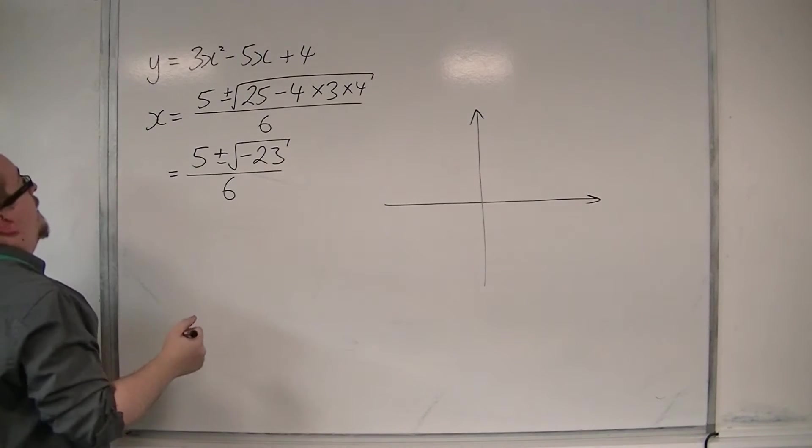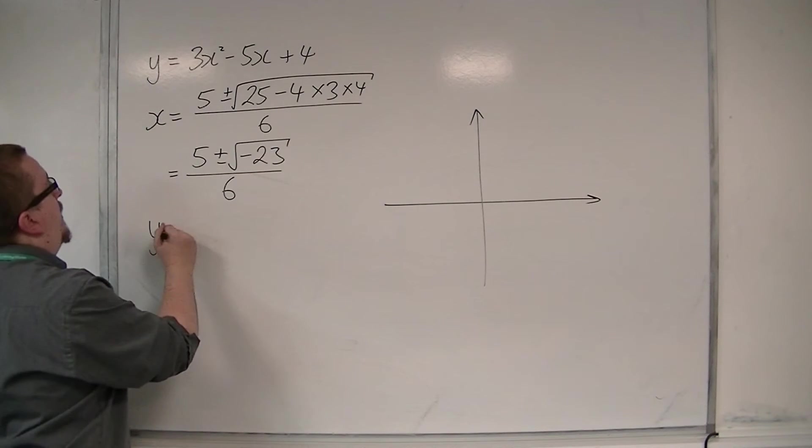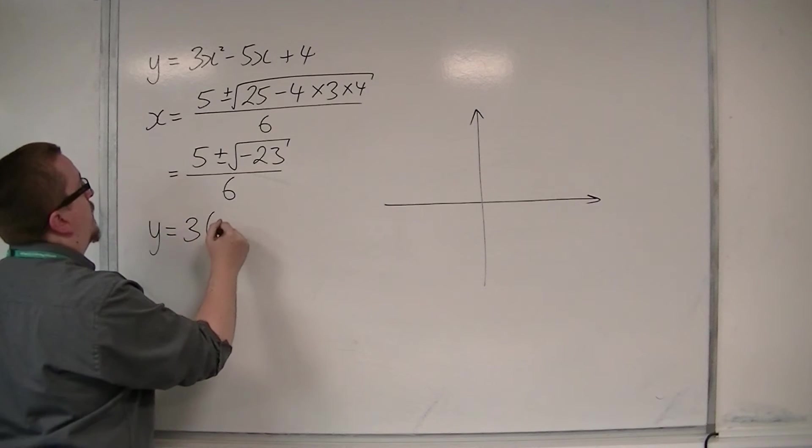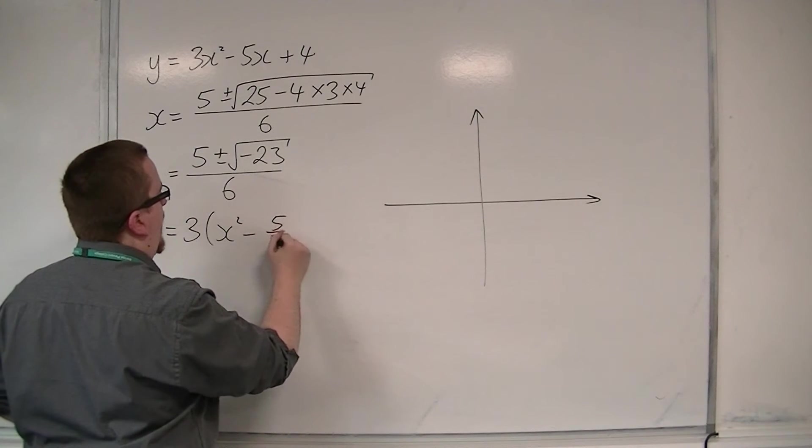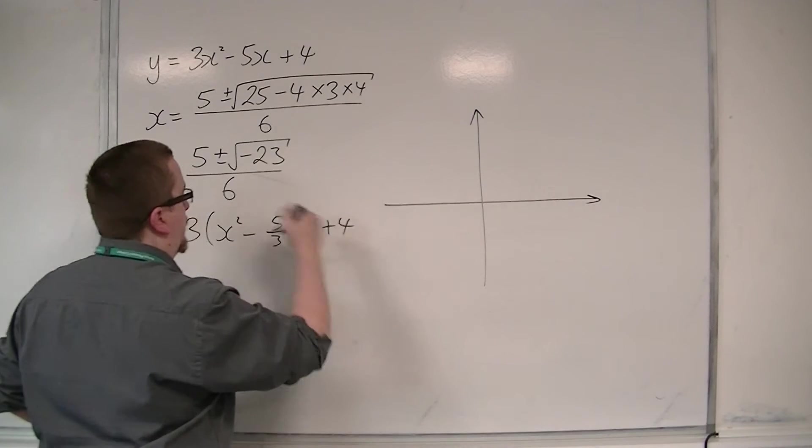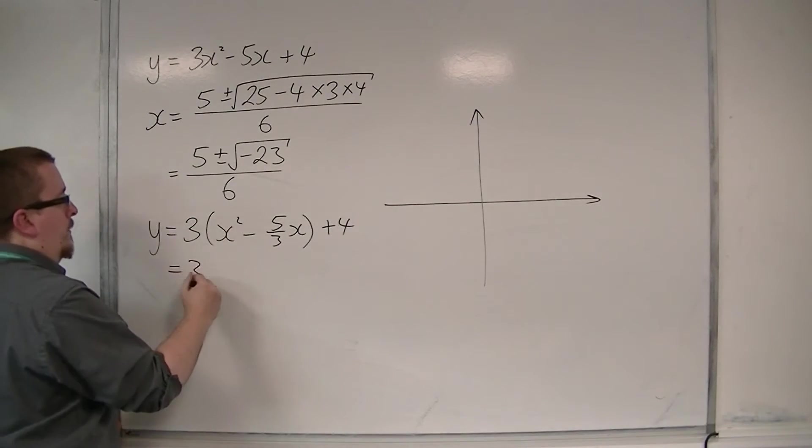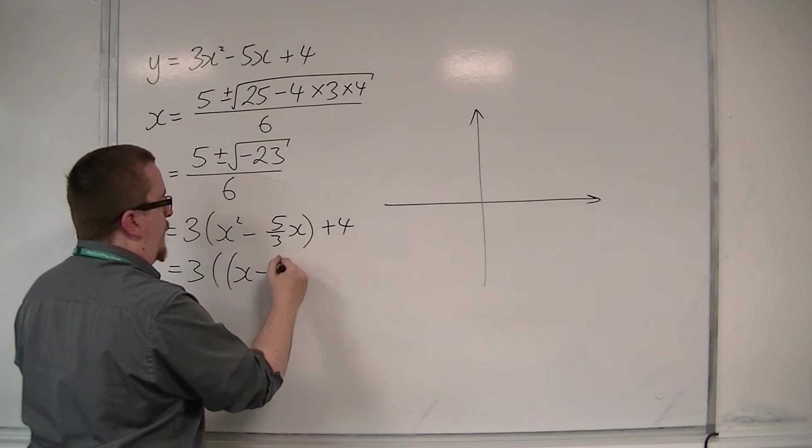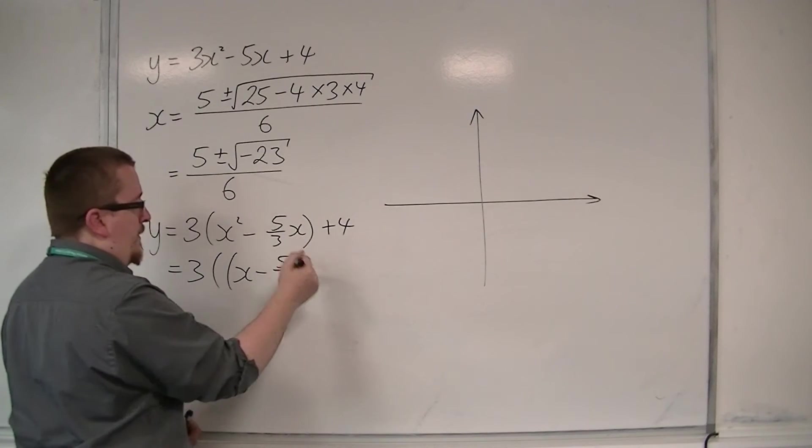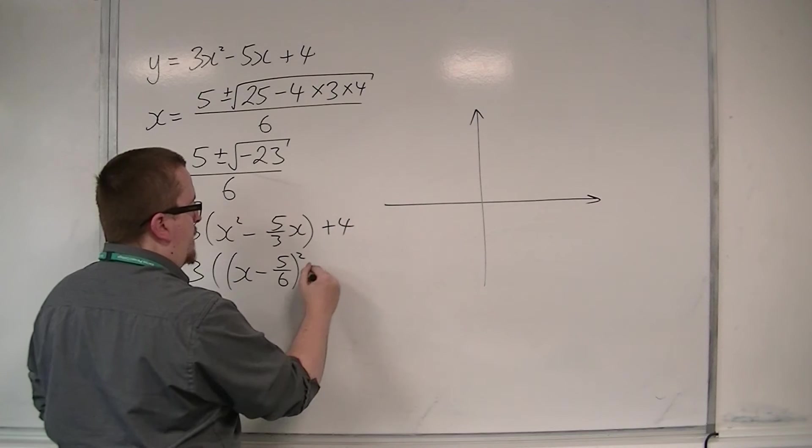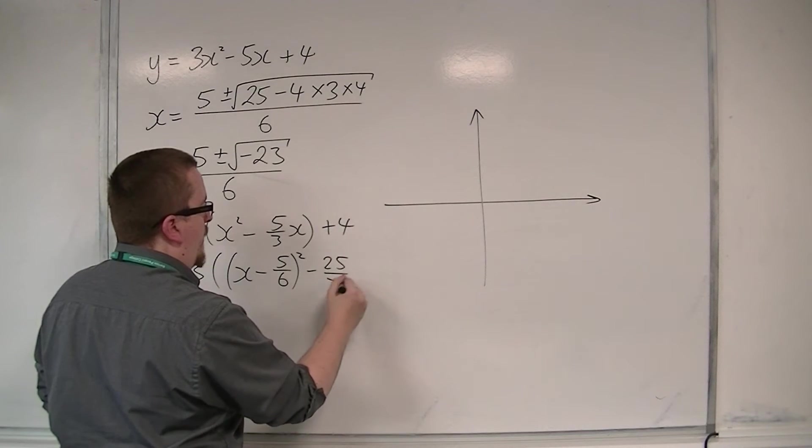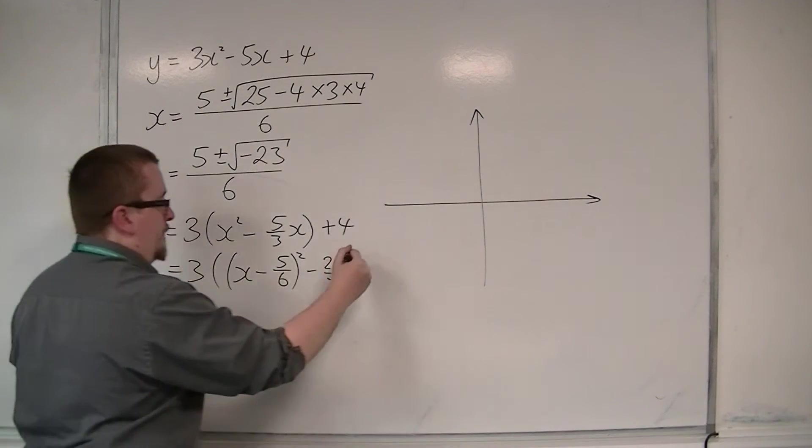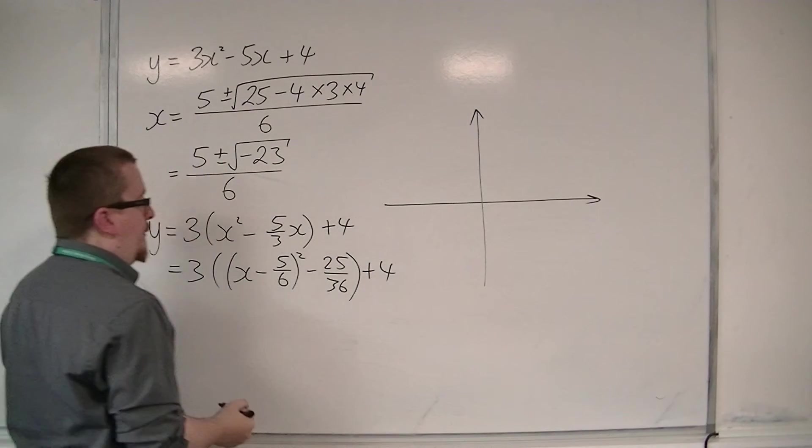If we do that, y is equal to, take the 3 out of the first two terms, so x squared minus 5 thirds x plus 4. Complete the square on what's inside the bracket, so x minus 5 sixths, so half of the 5 thirds is 5 sixths, squared, take away 25 over 36, the square of 5 sixths, plus 4 on the outside.